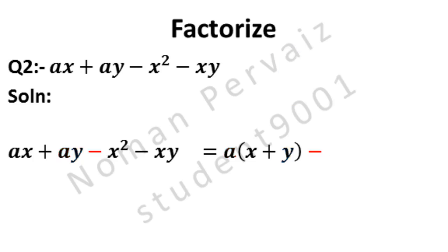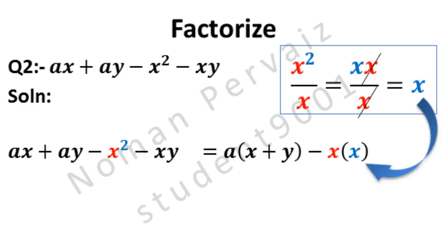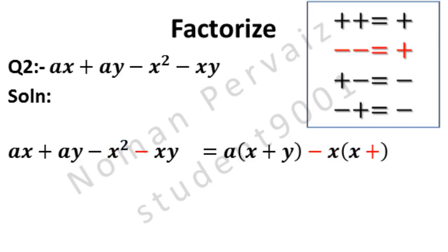Minus is written as it is. X is common in both these terms. X is taken as common. X is common, so X will be left from X square. If we divide X square by X — and X square means two X's are multiplying — then one X is cancelled with X in division and a single X will be left only. This X is written in our solution.